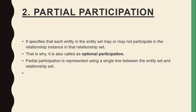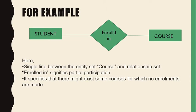Partial participation is represented using a single line between the entity set and the relationship set. For example, student enrolled in a course — here student has total participation, meaning each student must enroll in at least one course, but the course may or may not exist, which is partial participation. The single line between entity set Course and relationship set Enrolled In signifies partial participation, meaning there may exist some courses for which no enrollments are made.